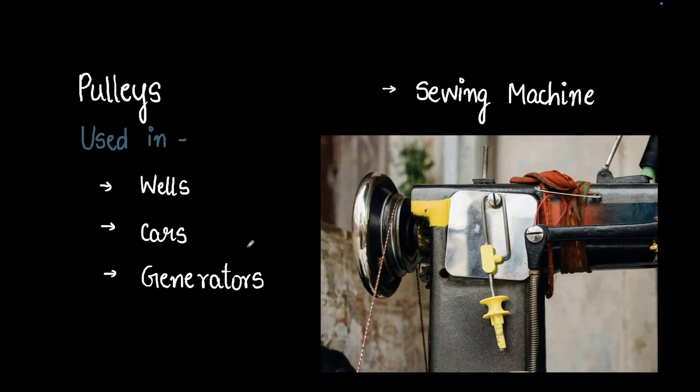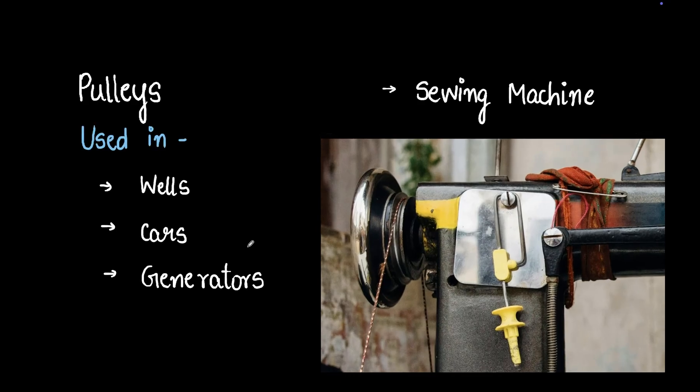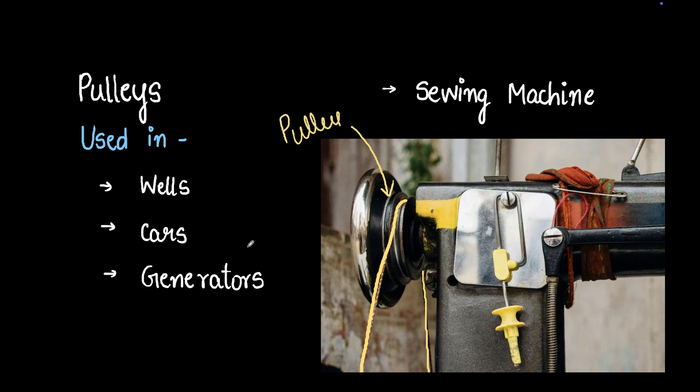So here's our sewing machine. Let's zoom into this part. If you carefully look at this part, you'll see a thread running around. And there is our pulley. So that's actually a pulley. I'm not sure if you spotted it before.